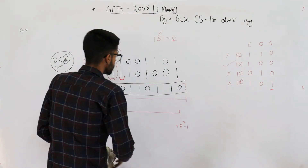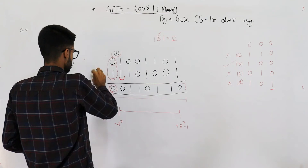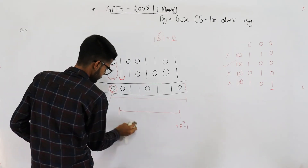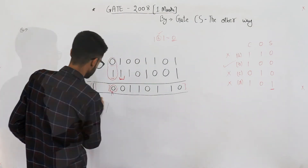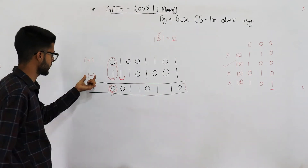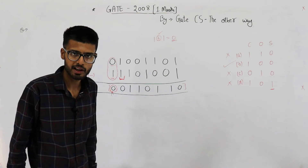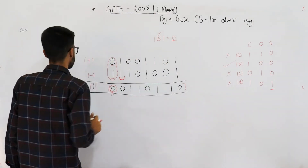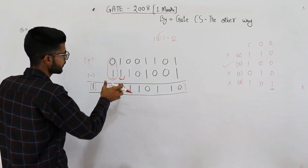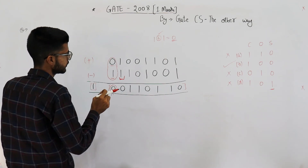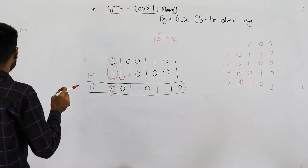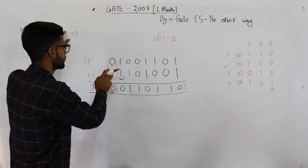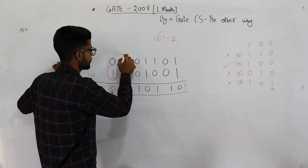Let's verify our addition by checking the actual decimal values of these numbers. The first number is positive, so we simply take the value represented by its combination of bits. The value comes out to be: 38 into 2 plus 1, working through the bits — this number is plus 77, because the most significant bit is 0 and 77 is the value represented by those bits.